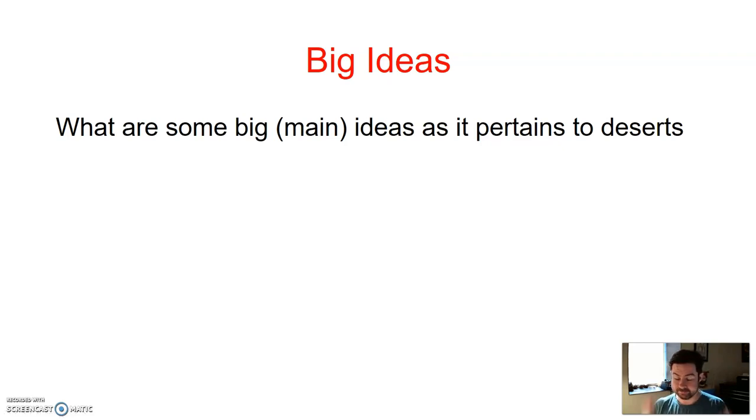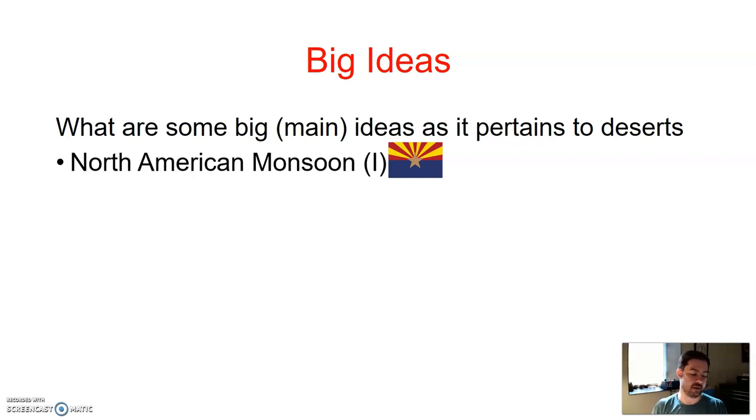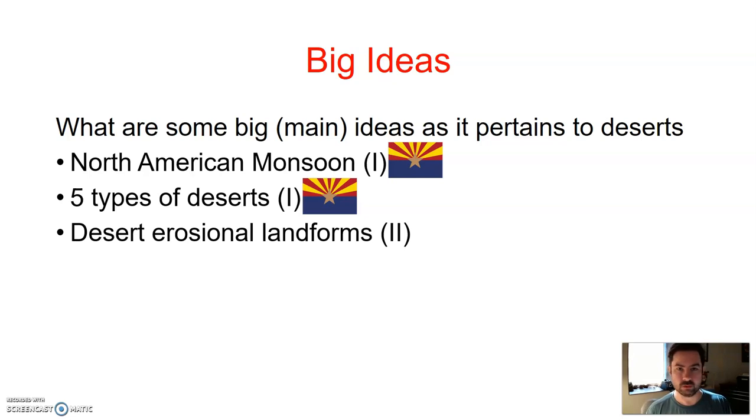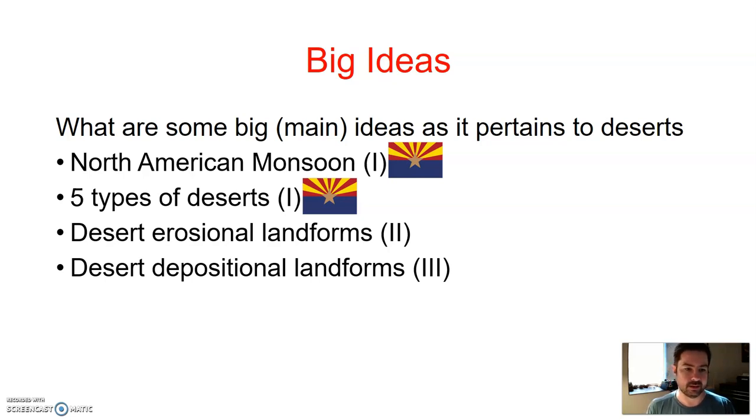What are some of the big or main ideas as it pertains to deserts? North American monsoon. Remember, monsoon is the season, rain is just called rain. If you're in some place cold and it's the winter season, you don't go out when it's snowing and say it's wintering outside. No, it's snow. Winter is the season, snow is the event. Monsoon is the seasonal change of wind patterns. Rain is the event. Five different types of deserts, remember those. Desert erosional landforms, different types. Depositional landforms, the types as well. A lot of that we'll go over in lab as well.